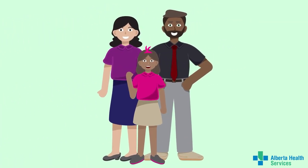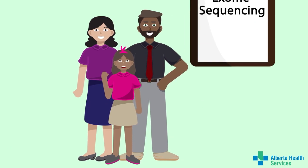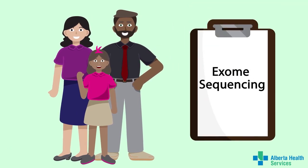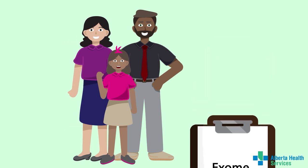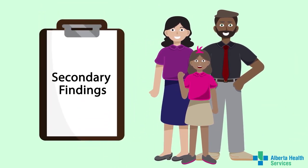Some examples can include taking a new medication, having regular screening, or in some cases, surgery. There are two decisions to make. The first decision is whether or not to have exome sequencing — remember, it is offered to try to find an explanation for your or your child's current health concerns. The second decision is about secondary findings, which can tell you about the chances of certain health concerns that may develop in the future. Secondary findings are optional; you do not need to say yes to secondary findings to have the exome test done.